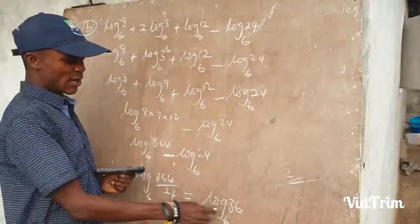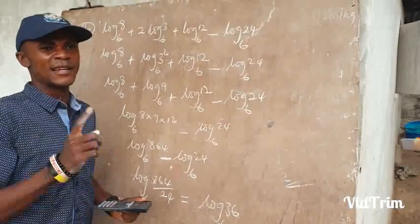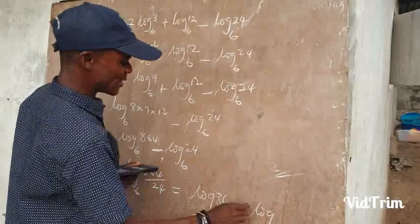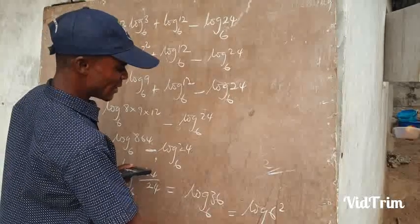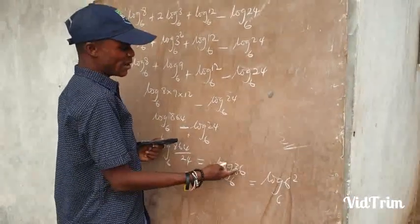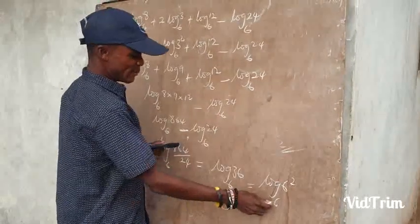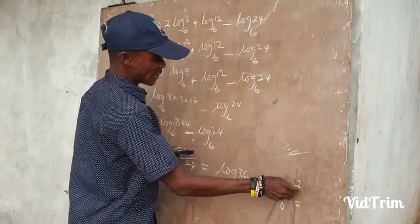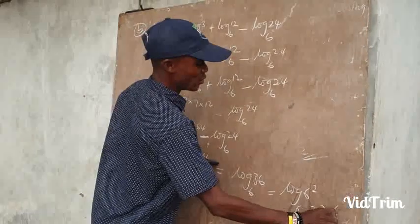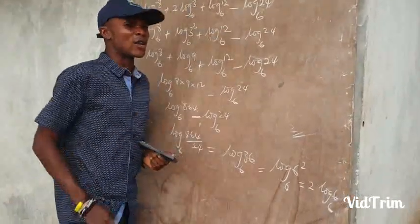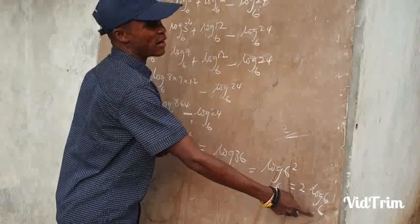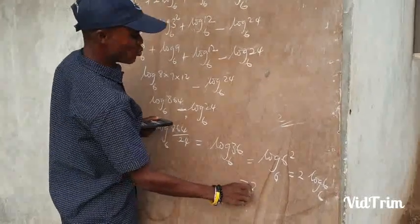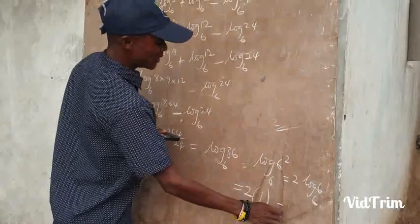Now, 36 is the same as 6 times 6, which is 6 squared. So wherever you see 36, you write 6 squared. We have log of 6 squared base 6. The theory says anytime you have a power, you drop it down — so the power 2 comes down, giving 2 log 6 base 6. The other theory says when the log and the base are equal, the answer is 1. Here the log is 6 and the base is 6, so the answer is 2 times 1, which equals 2.